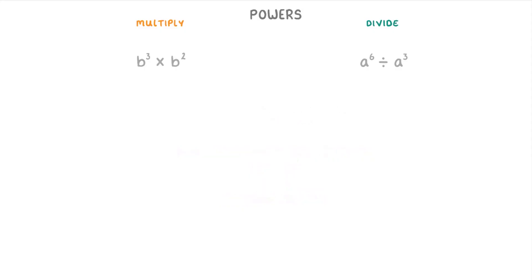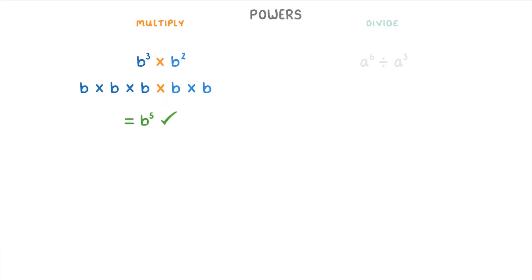The easiest way to understand this topic is to think about what the powers really mean. If we start with this multiplication one, b cubed just means b times b times b, because the power of three means that we have three b's being multiplied together. Meanwhile, b squared just means b times b. And so if we multiply these two terms together, we're just going to have five b's being multiplied together, which is the same thing as b to the power of five. So that's our answer.